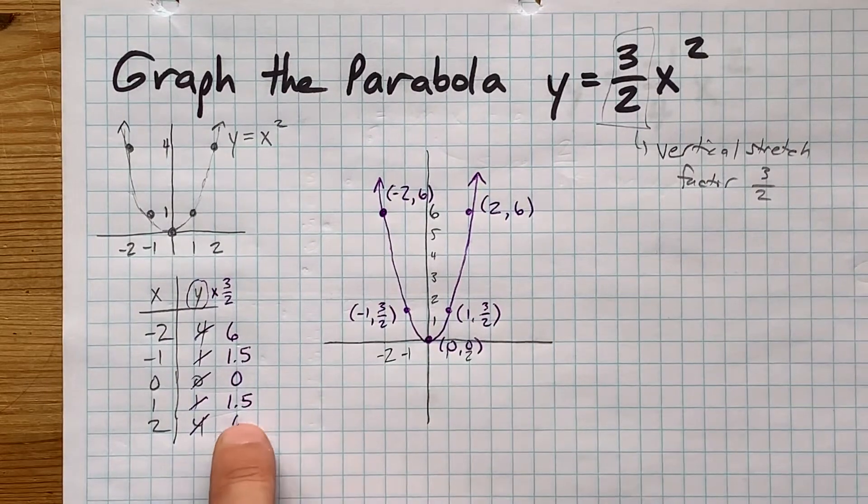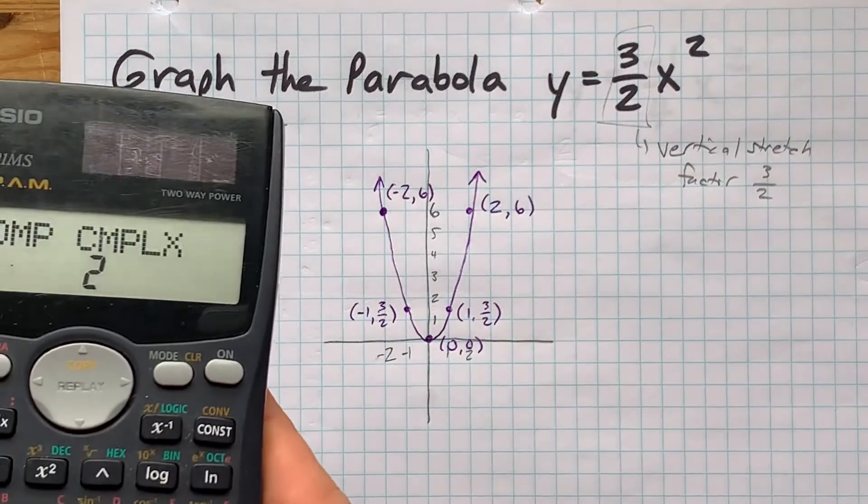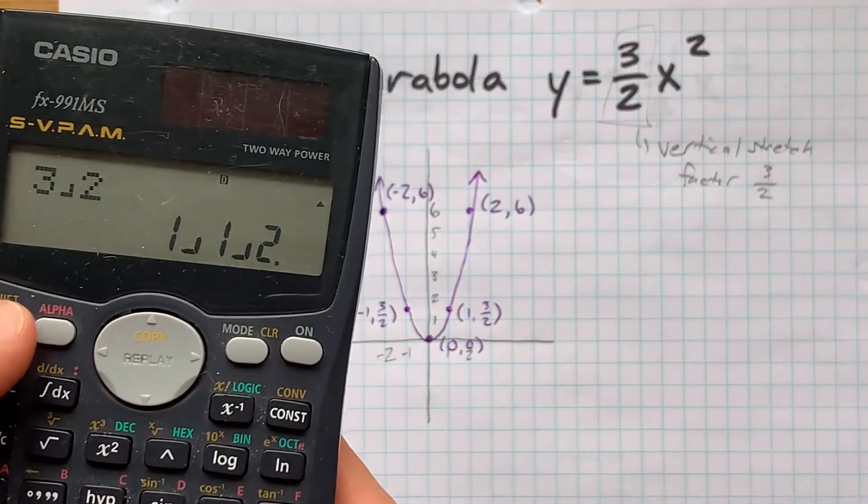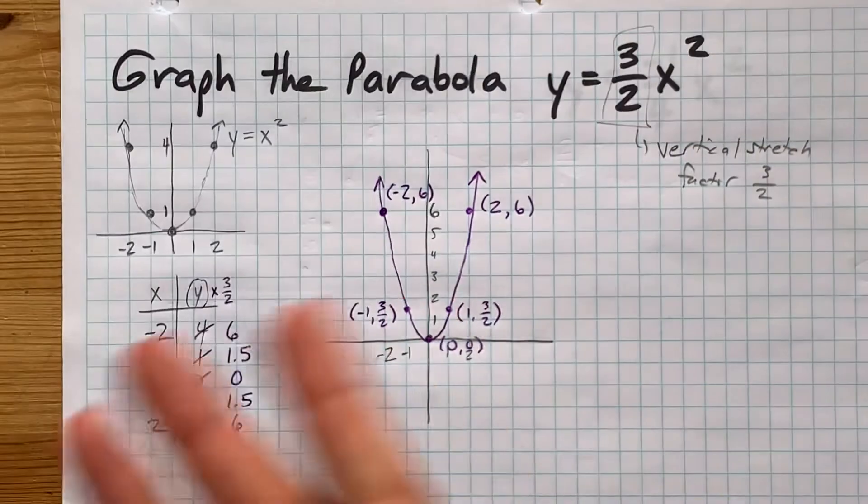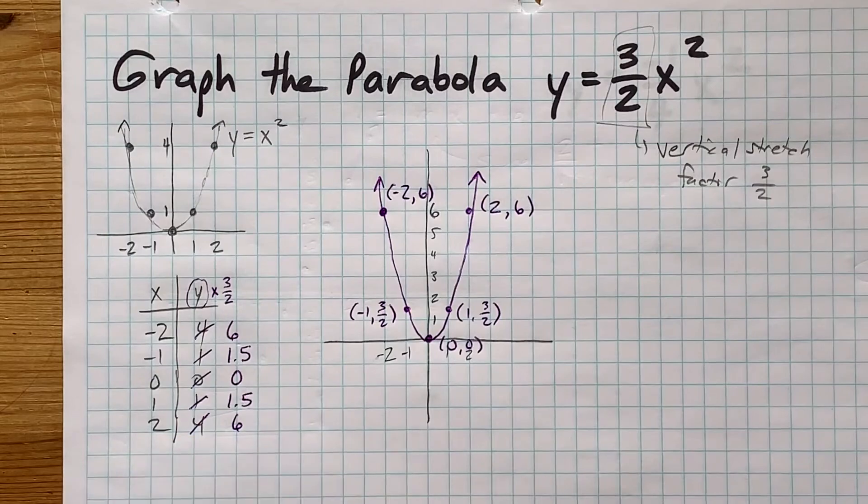I've been interchangeably referring to 1.5 and 3 halves. Because when you do 3 halves on your calculator, you can see that it is actually equal to 1.5. They're the same number. So, there you go. Thanks for being with me. And best of luck.